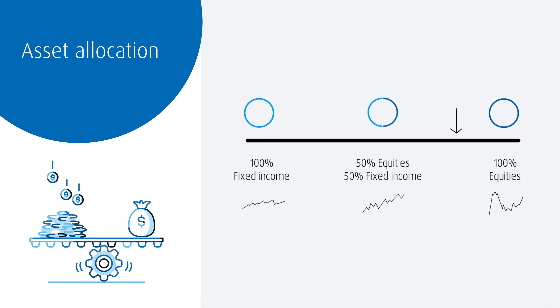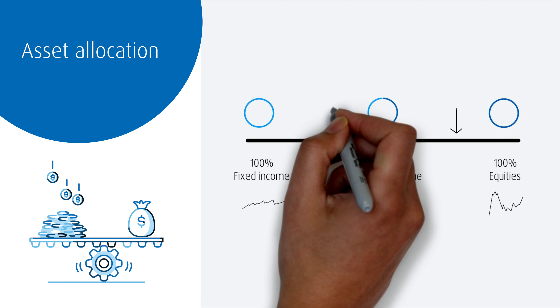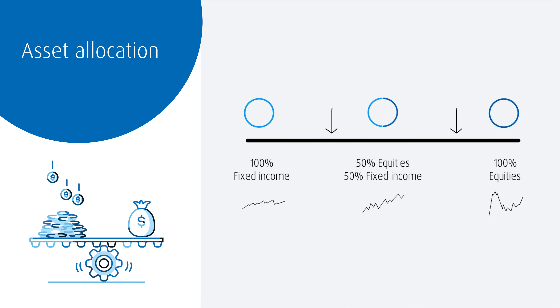Or maybe you have a shorter term goal where you'll need your money within 10 years and you don't want to take on too much risk. You might have an asset allocation of 30% equity and 70% fixed income in this account.